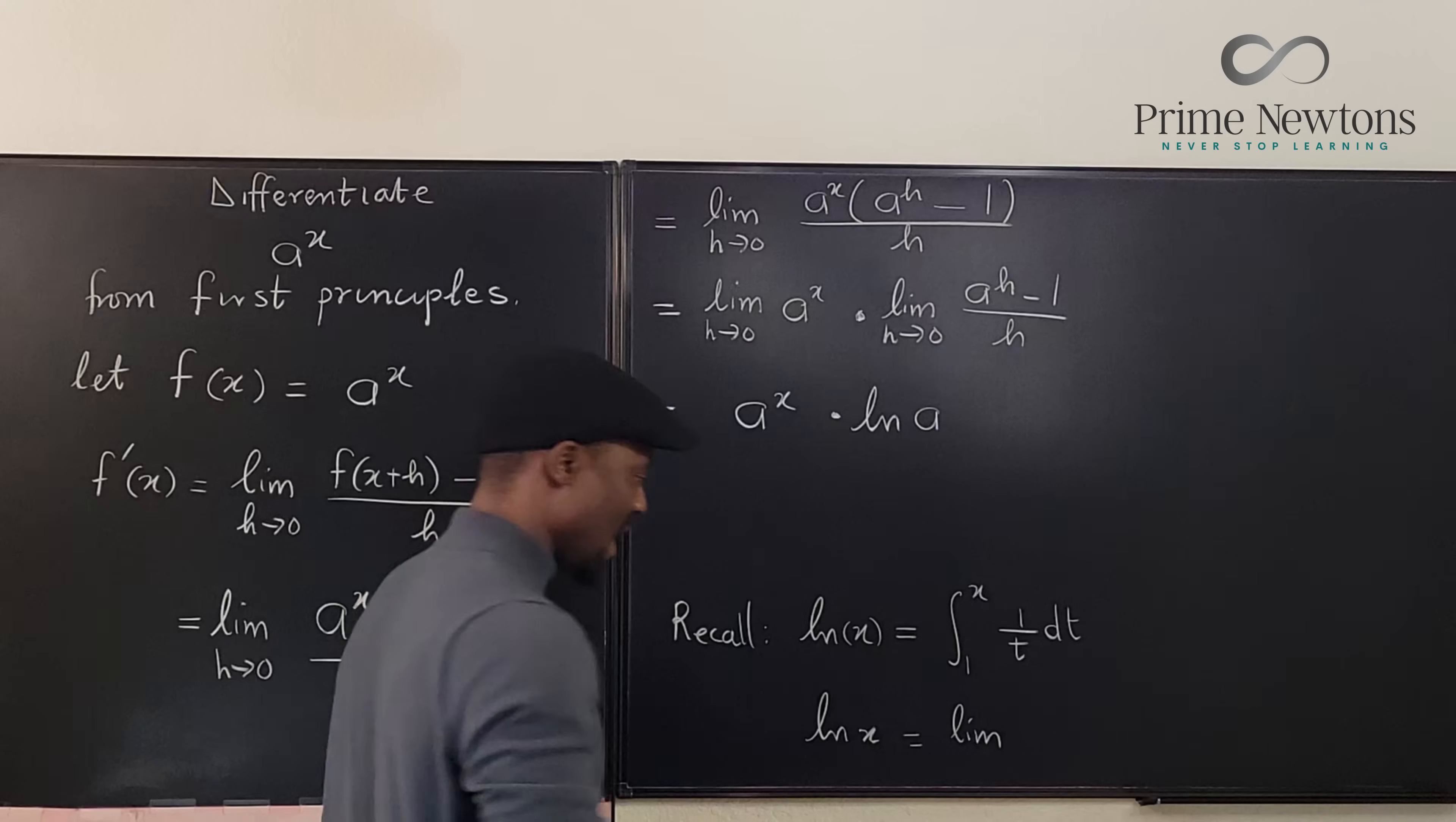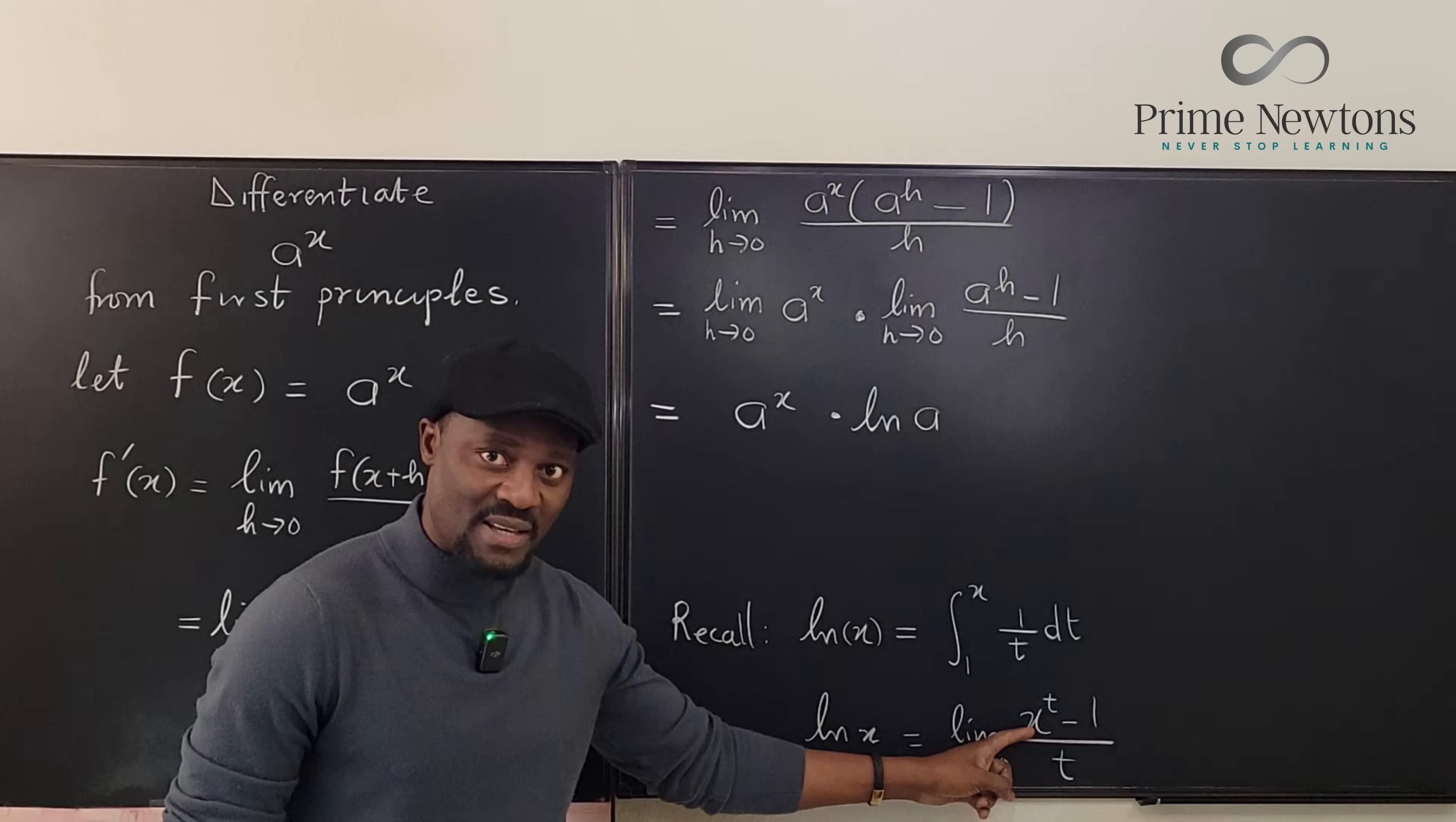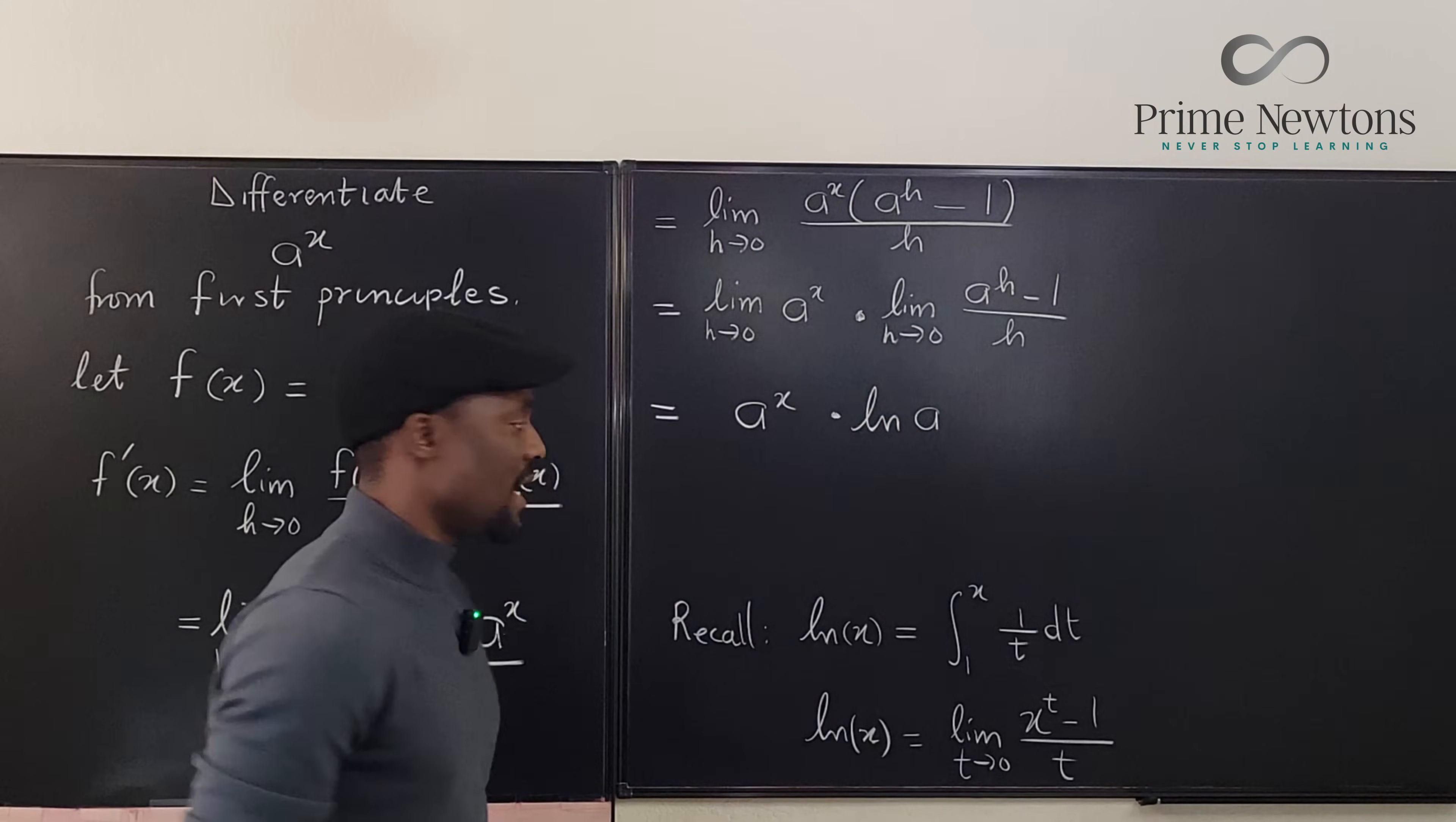I can also say ln of x is equal to the limit as t goes to 0 of x raised to power t minus 1 over t. Do you see it? So whatever is here as the base, if you have this as the exponent minus 1 and that same thing is the denominator and that's what's going to 0, just as you have in this definition, then all you're calculating is ln x. So here what we're calculating is ln a.